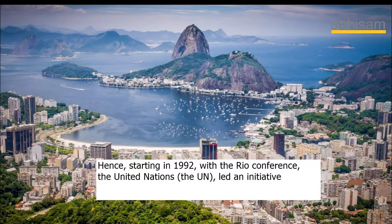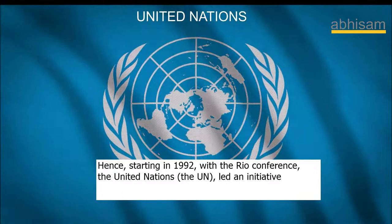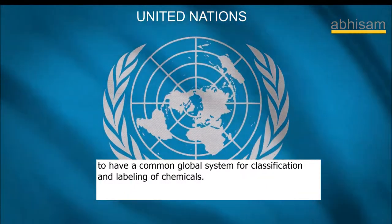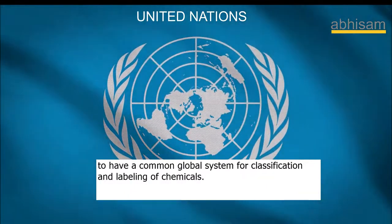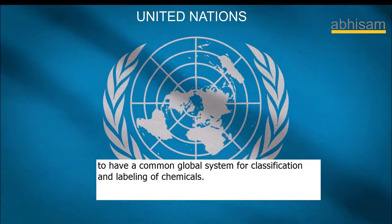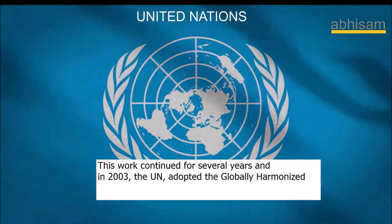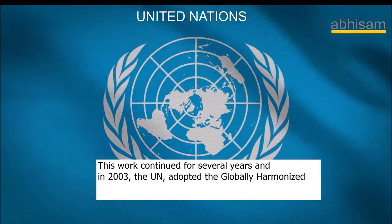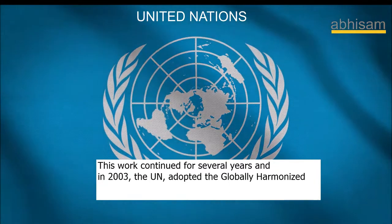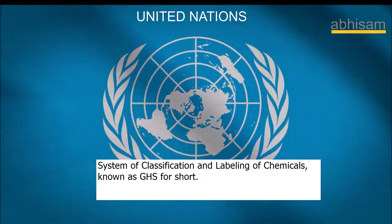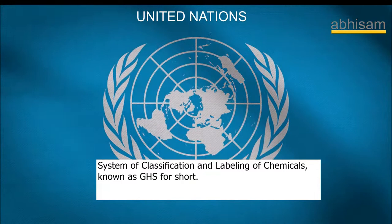Hence, starting in 1992 with the Rio conference, the United Nations led an initiative to have a common global system for classification and labeling of chemicals. This work continued for several years, and in 2003 the UN adopted the Globally Harmonized System of Classification and Labeling of Chemicals, known as GHS for short.